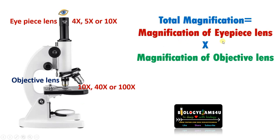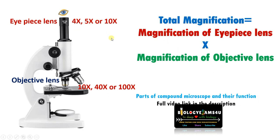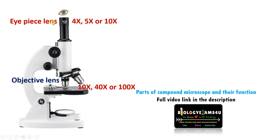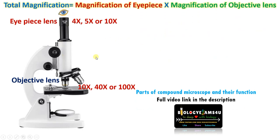Total magnification is equal to the magnification of the eyepiece lens multiplied by the magnification of the objective lens. It is simply the product of the magnification of the eyepiece lens and the magnification of the objective lens.